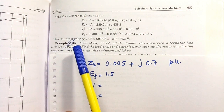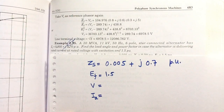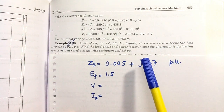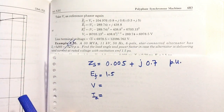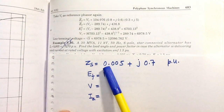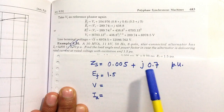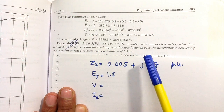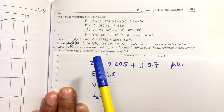This is Example 5.55 given on page number 683 from PS Bhimra's book Electrical Machinery. In this question, there is a star-connected alternator having rating 30 MVA, 11 kV, 50 Hz, and it is a six-pole alternator. The synchronous impedance is given as 0.005 + j0.7 per unit. We have to calculate the load angle and the power factor.